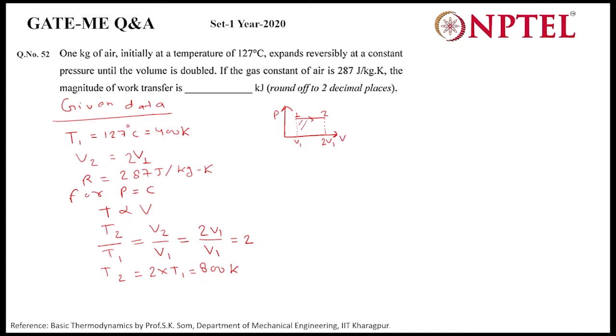So for the work transfer, we have to find the area of this region. For constant pressure process,